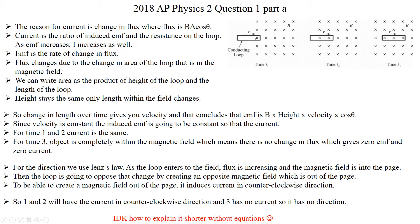So as you can see you have a conducting loop, and it's going through a magnetic field region. So the reason for the current is basically change in flux. And flux changes and current is basically the ratio of the voltage induced EMF and the resistance on the loop. And EMF is the rate of change in flux.